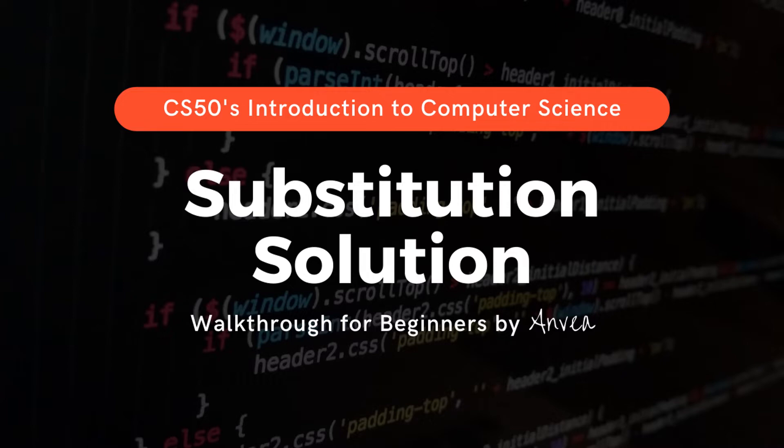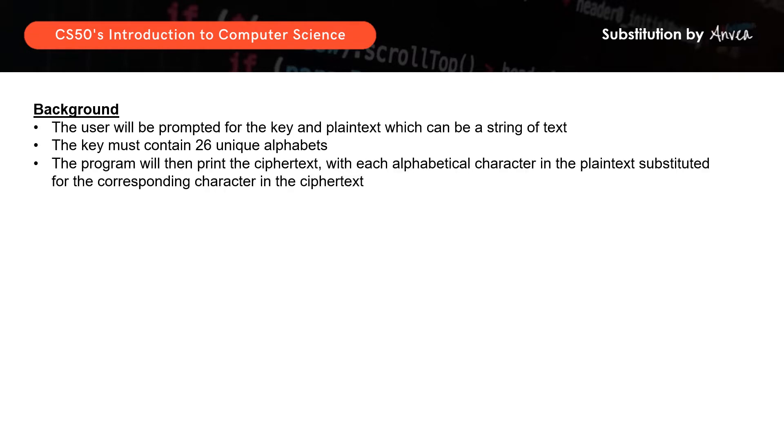Hi everyone! For today, we'll be working on a solution for problem set 2, which is substitution. In this problem set, we'll be working to encrypt some plain text based on a key, where the key has to be a string of 26 unique alphabets. The user will be prompted for a key and an input, which can be a string of text. This message will then be encrypted by mapping each letter of the alphabet to the letter it should correspond with when we encrypt it.